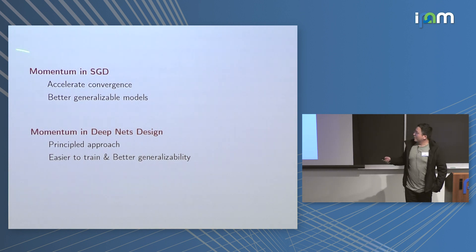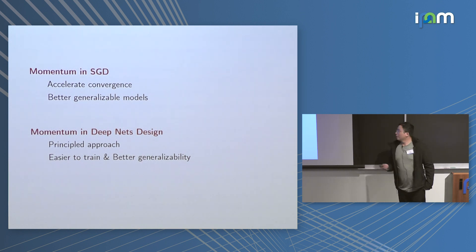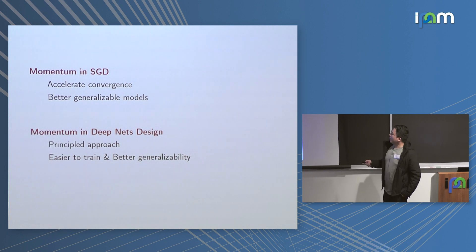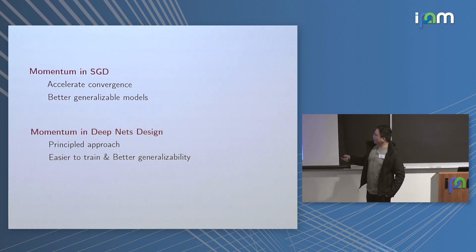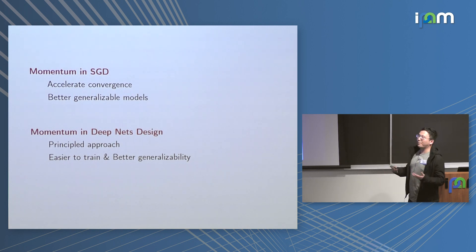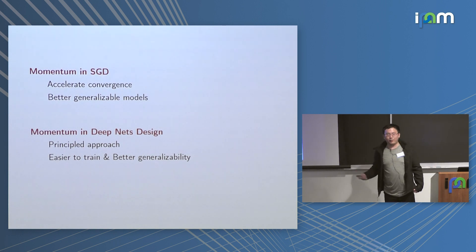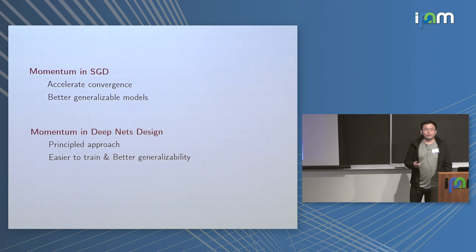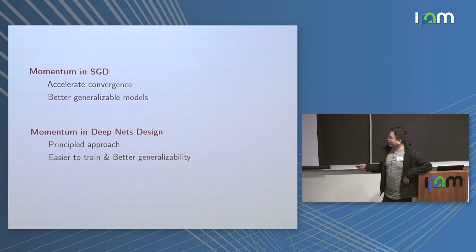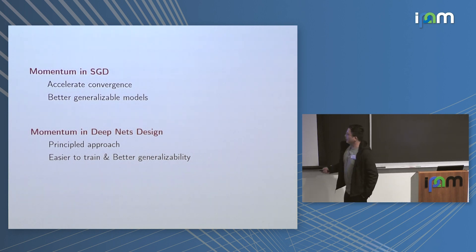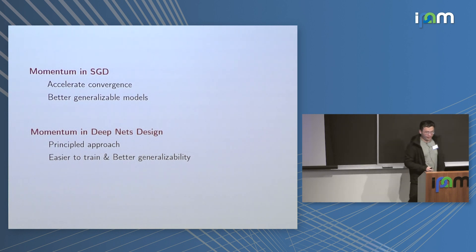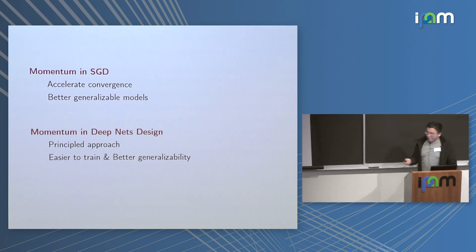Today I will talk about these two things. First is momentum in SGD — we consider whether momentum in SGD can accelerate convergence, and whether it can improve generalization, since we want the model to be cheap to train and more accurate. Second is neural architecture design — we need a principled approach instead of an ad-hoc approach, and we want the designed neural network to be easier to train and to generalize better.